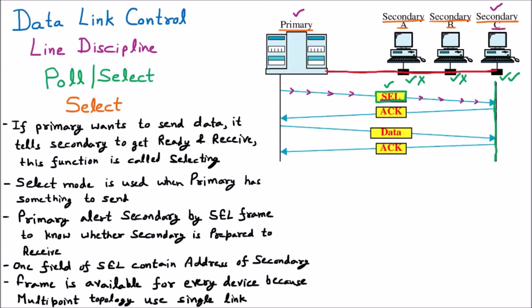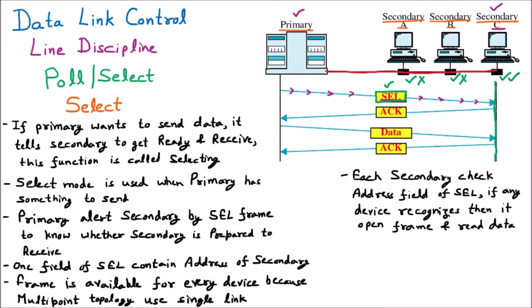Each secondary device checks the address field. If any device recognizes its address, it opens the frame and reads the data. The address is not matching with A, so A discards it. Address is not matching with B, so B discards it. The address matches with C, so only C will take it and open it.